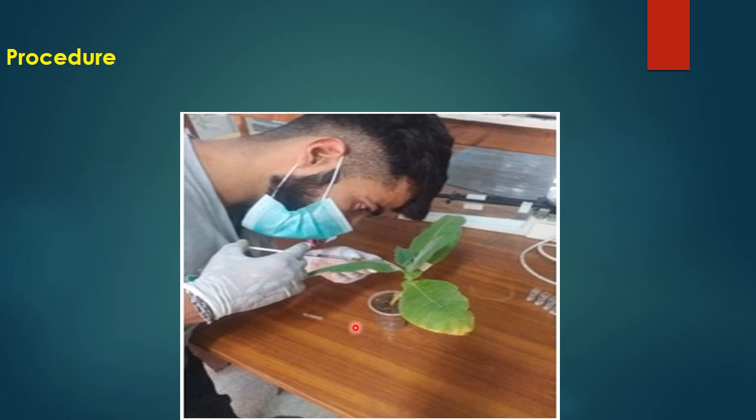Leave the plant under disease-favorable conditions — the temperature and humidity required by the pathogen — for at least 24 hours before observing the appearance of HR on the tobacco plant.